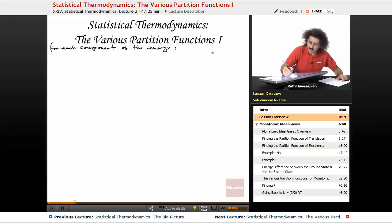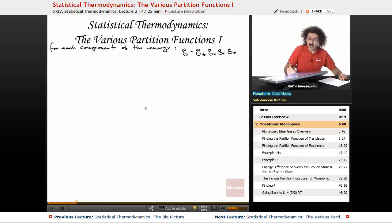In other words, Q equals Q of translation times Q of vibration times Q of rotation times Q of electronic. We're going to begin with monoatomic ideal gases.